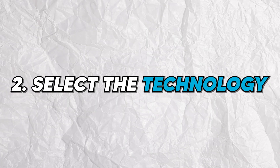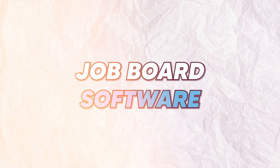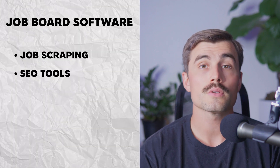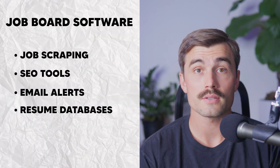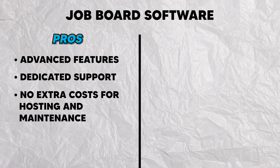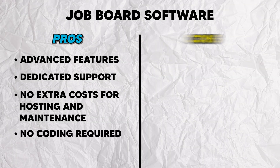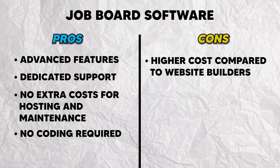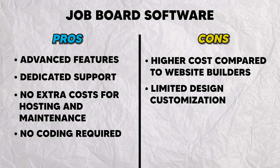Step two, select the technology. Next up is selecting the technology for your job board. There are four main options. Job board software: platforms like JBoard offer advanced features such as job scraping, SEO tools, email alerts, and resume databases. They're easy to set up and perfect for those who want a hassle-free solution. Pros include advanced features, dedicated support, no extra costs for hosting and maintenance, and no coding required. Cons are a slightly higher cost compared to website builders and more limited design customization.